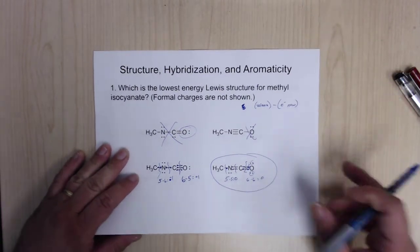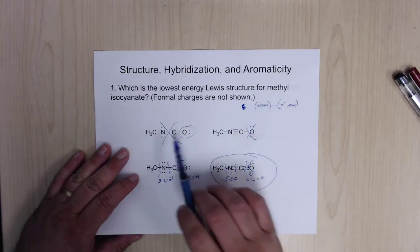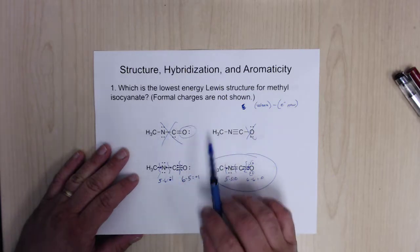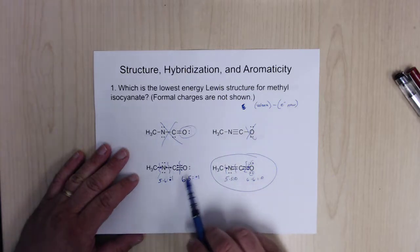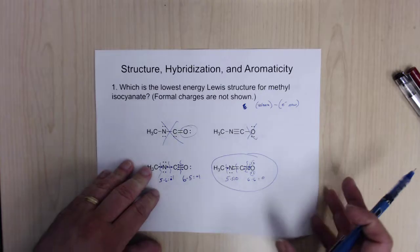So this right here is going to be the more stable of the two. By looking at what has the octet filled and what doesn't, we were able to get rid of two of the options, and then by looking at formal charge we found the answer.